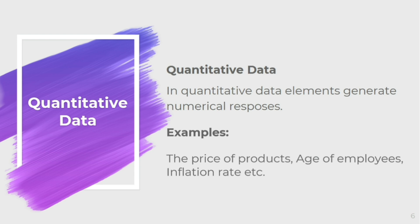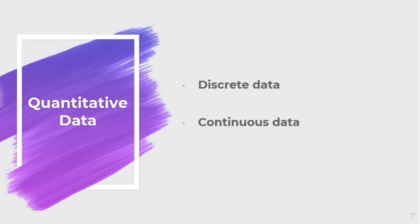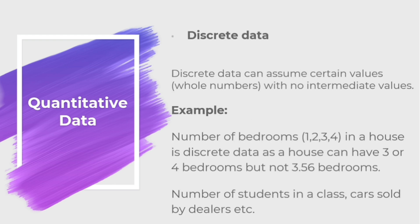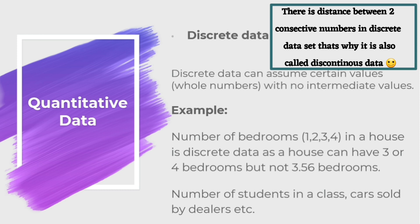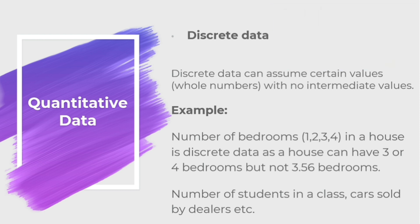Quantitative data can further be classified as discrete data or continuous data. Discrete data can assume certain numerical values with no intermediate values. For example, the number of bedrooms in a house is discrete data, because a house can have three or four bedrooms but not 3.56 bedrooms. Similarly, the number of students in a statistics class and cars sold by dealers are examples of discrete data. Discrete data is obtained by counting — for example, a dealer counting the number of cars sold in a given time period.